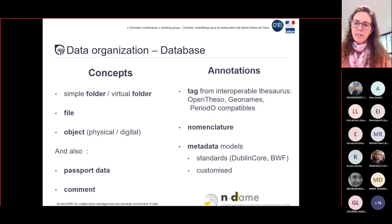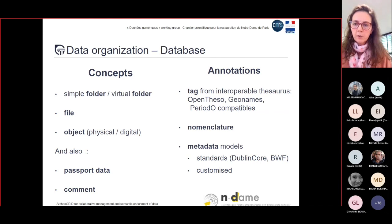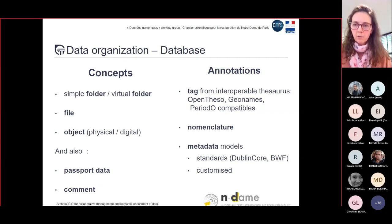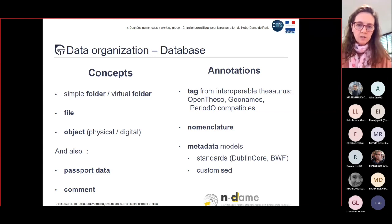To annotate or enrich data we use tags from thesauri — preferably interoperable ones from OpenTESO, GeoNames, or Periodo. Nomenclature is another type of thesaurus used to define a complex location. Metadata are organized in models — preferably standard models like Dublin Core, but also customized models — with the important goal of aligning each metadata field to entities of standard ontologies like CIDOC-CRM, making it easier to extract data for harvesting by other repositories.